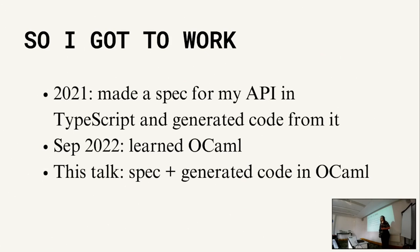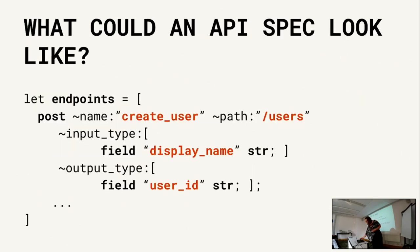In 2021 I made an API spec in TypeScript and generated code from it for the backend and for the frontend, so that I could enforce that the routes provided by the backend would match up with the HTTP calls the frontend is making. Eventually I abandoned this project again, and in 2022 I learned OCaml. This talk today is about the API spec and the generated code that I ported to OCaml - I didn't really finish this but I learned a lot from it.